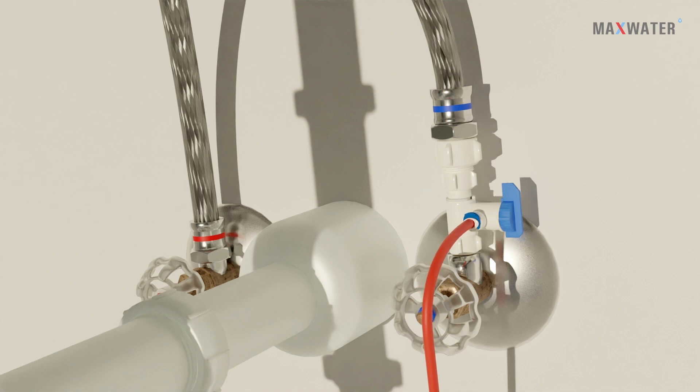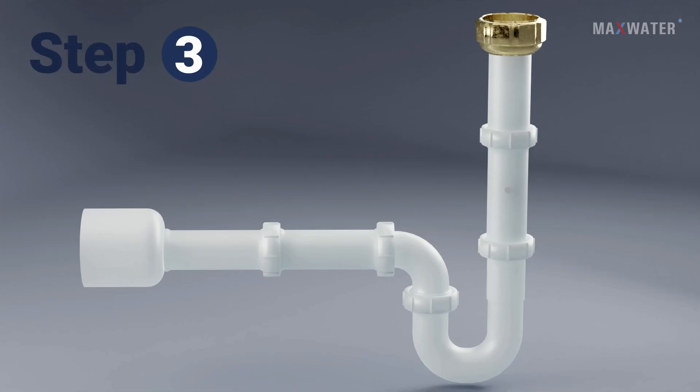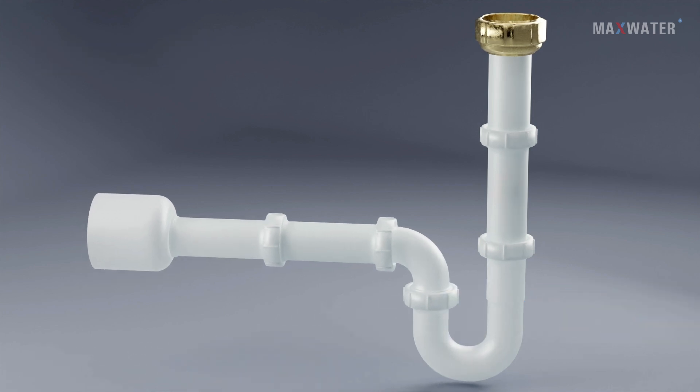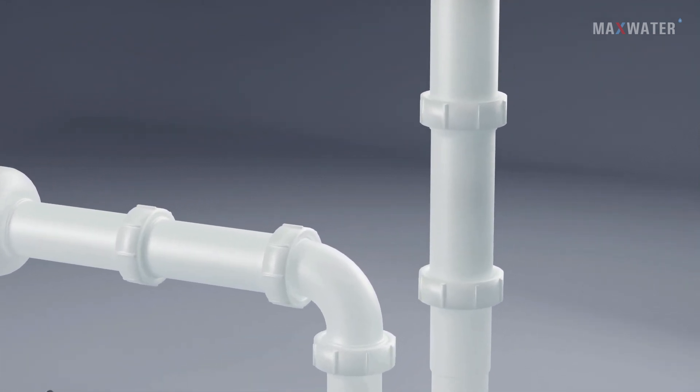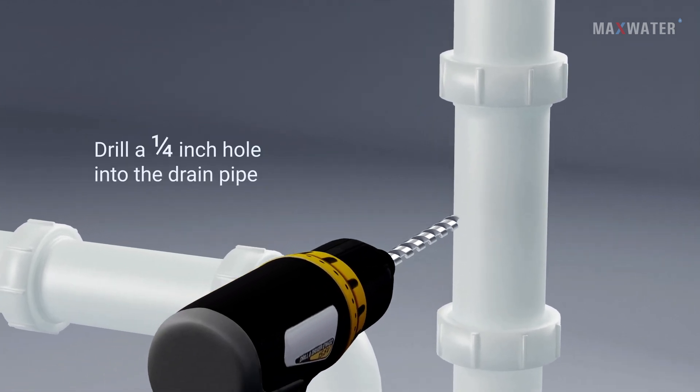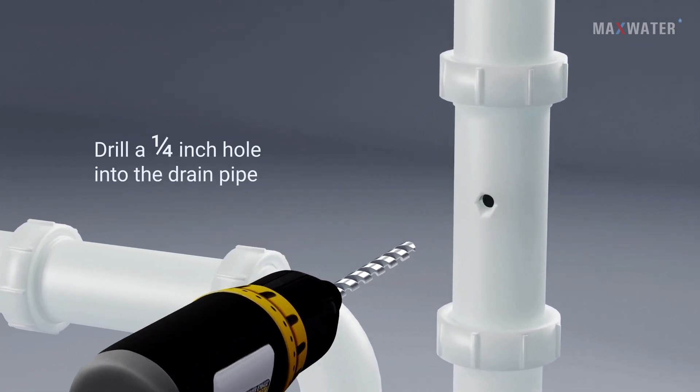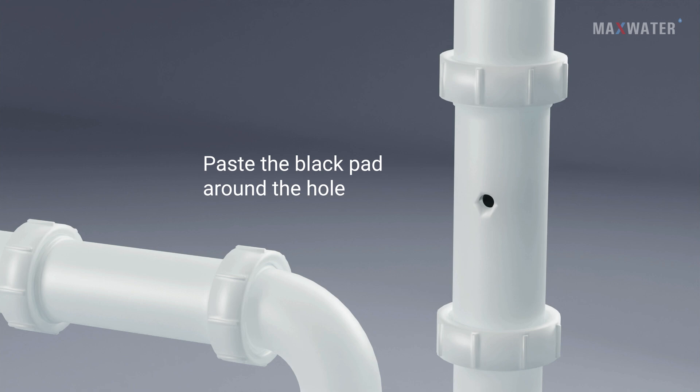Step three: pinpoint a spot on the drain pipe that is convenient for installing the drain saddle. We recommend drilling where the pipe is at a vertical angle. Then begin to drill a quarter inch hole into the drain pipe.